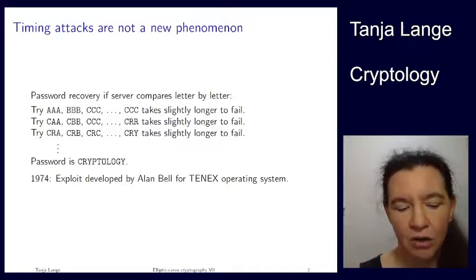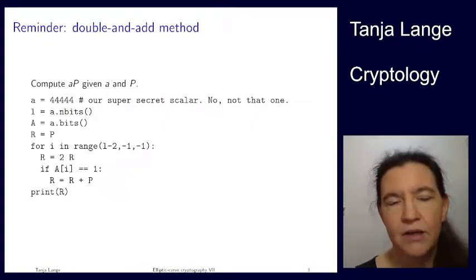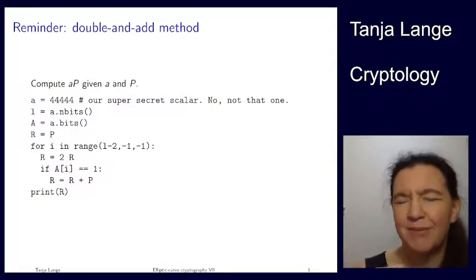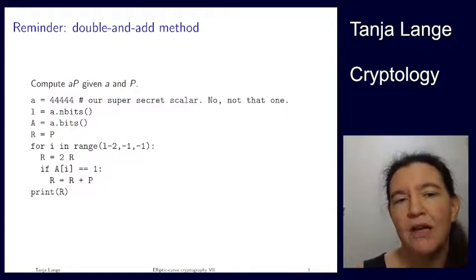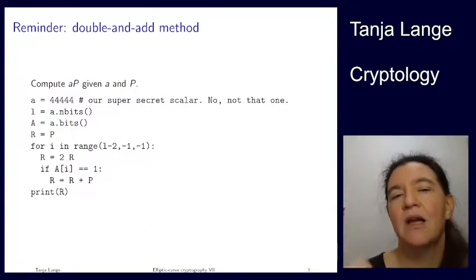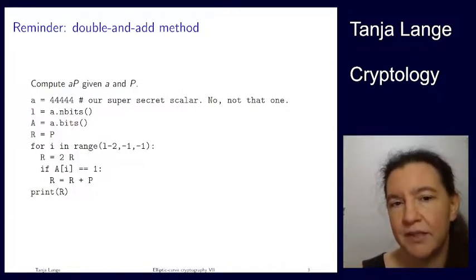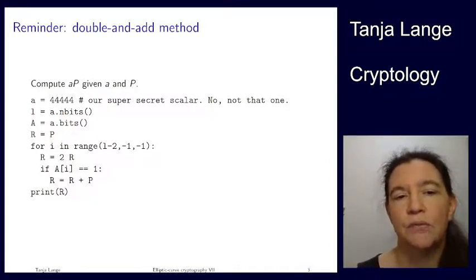Where did we encounter this? The warning I gave was after showing how to add on the clock group. There was the double-and-add method because we wanted to compute A times P more efficiently than doing P plus P plus P, A times. If you were doing that, an attacker watching how long you take would see exactly how many additions — exactly A minus one additions — and would read off your super-secret scalar.